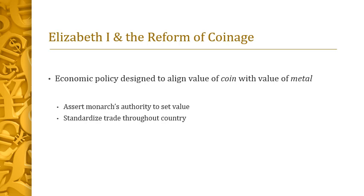Elizabeth I, who was monarch during Shakespeare's time, had a key goal in her economic policy: to realign the value of the coin — the value the monarch said it was worth — with the value of the metal in the coin. These values had been brought way out of alignment under previous monarchs, and she wanted to bring them back together. It was considered one of her great achievements to reform the coins — really about asserting the monarch's authority to set value and standardize trade throughout the country.